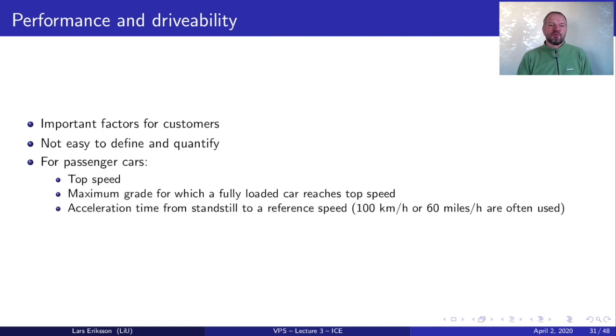For passenger cars some examples are top speed of the vehicle, maximum grade for which a fully loaded car reaches the top speed, and acceleration time from standstill to reference speed. So these are examples of performance and drivability related parameters that influence whether or not an owner will buy the vehicle. Now when we are designing towards these we would like to get some simple first ballpark numbers.